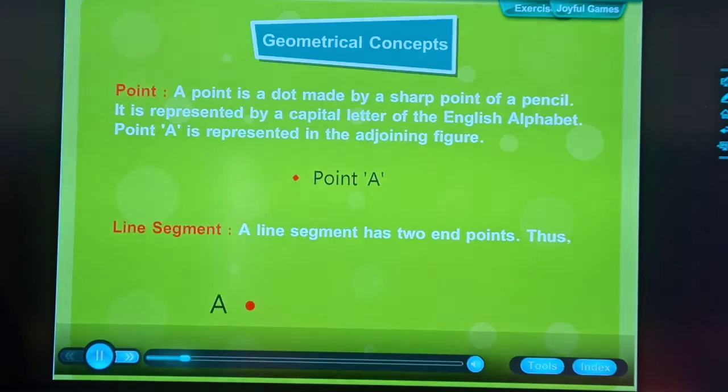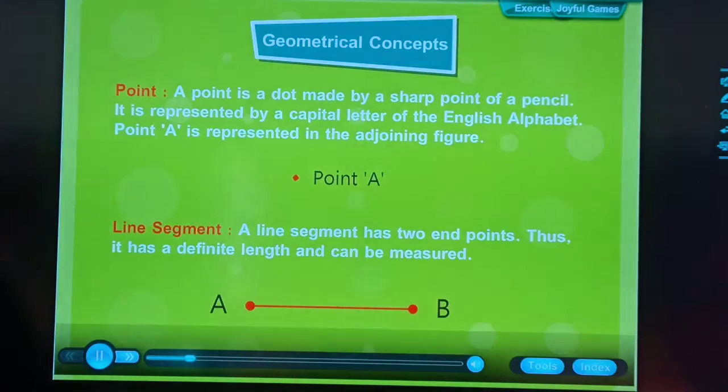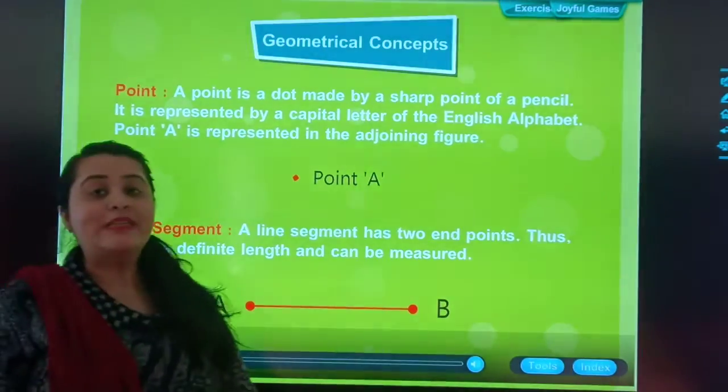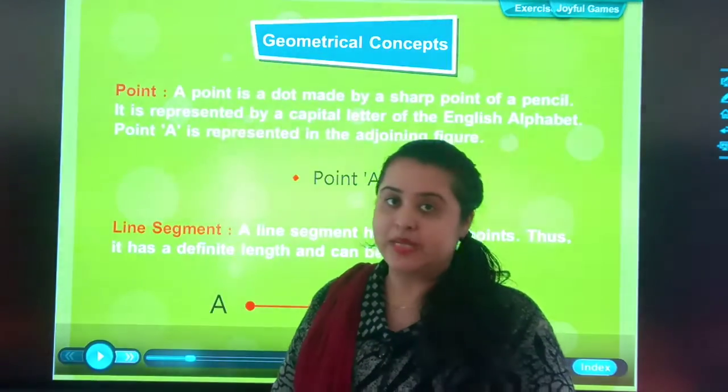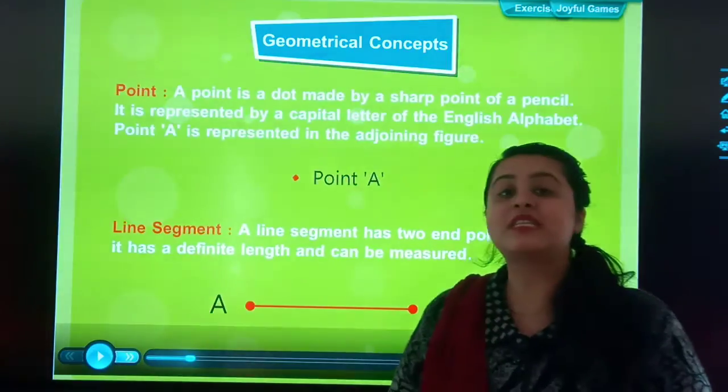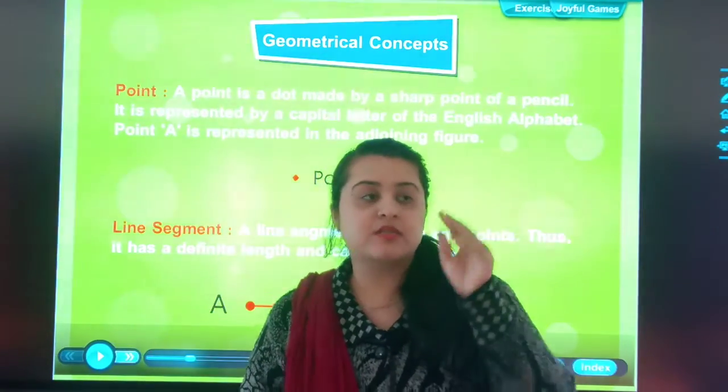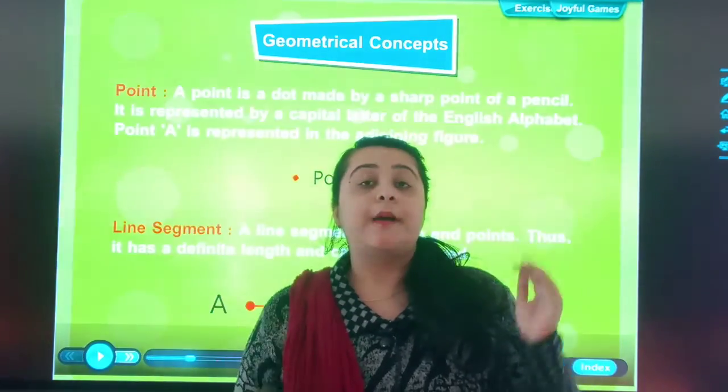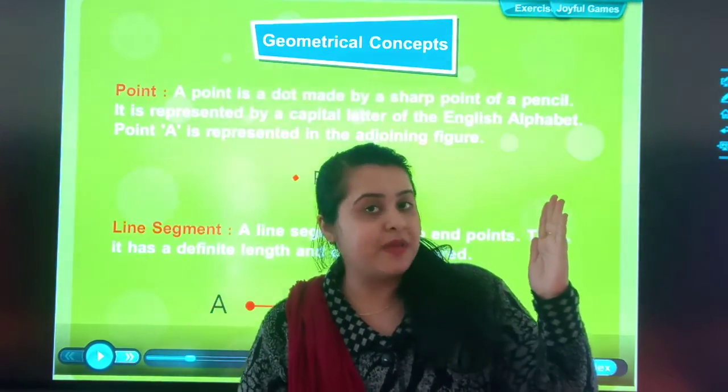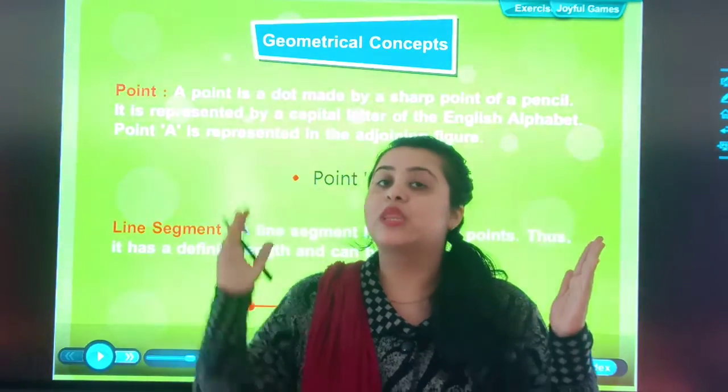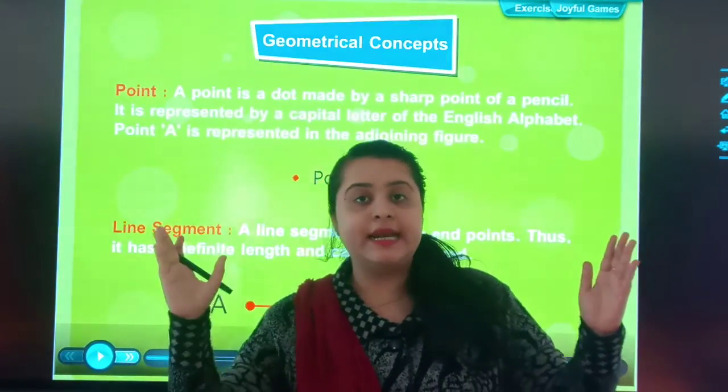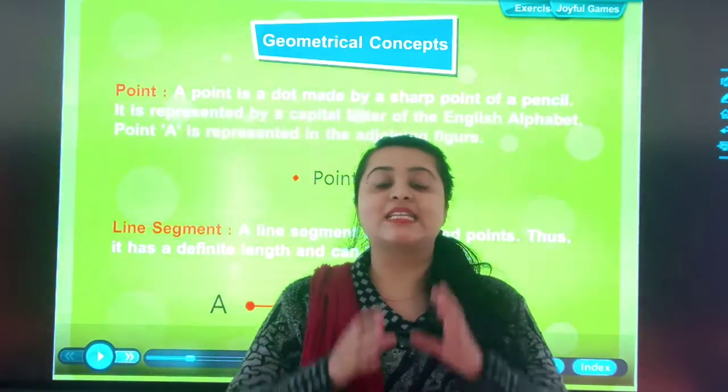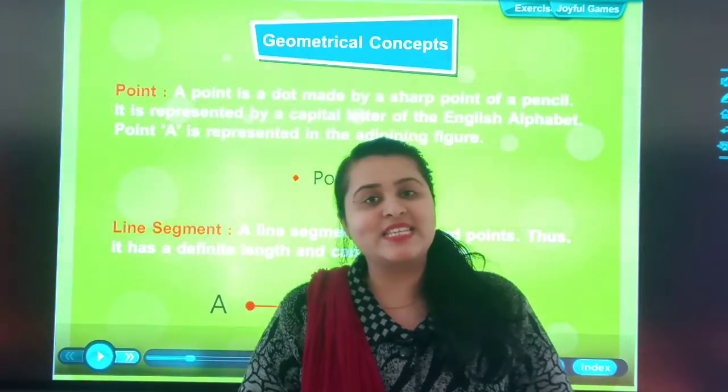Line segment. A line segment has two end points. Thus, it has a definite length. First, I will discuss here that it must be point. Now, the second heading will be line segment. Line segment is the line which has two points, point A and point B. We know the line segment's starting point and we also know the ending point of the line segment. So when we know the starting and the ending, we can get the exact measure of the line segment.